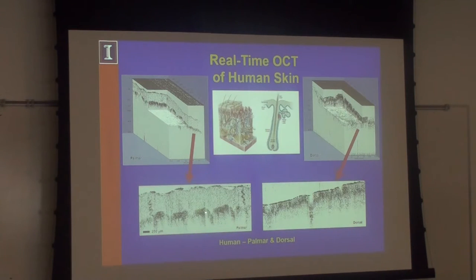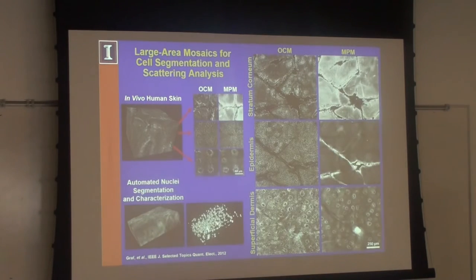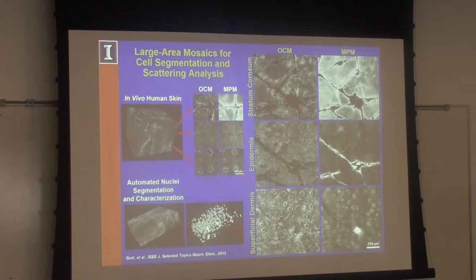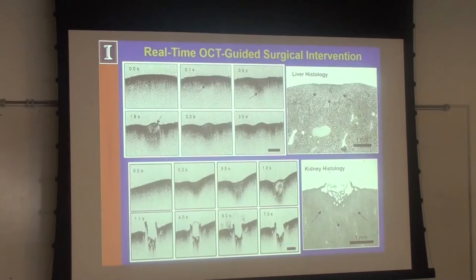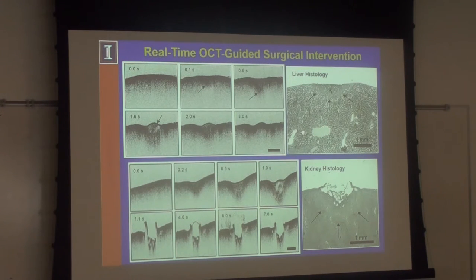Skin examples: we can see things like sweat ducts — little spiral sweat ducts that come up to your fingerprint. Using OCM we can see really individual cells deep into human skin and down into the dermis, compared to multi-photon nonlinear imaging. This is all label-free, just looking at scattering properties. In tumors we can see structural differences — when tumors form they change the organization of tissue — and OCT is sensitive to scattering changes whenever there's a property change of that tissue.